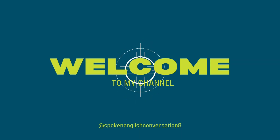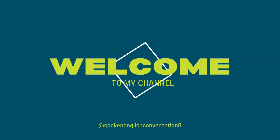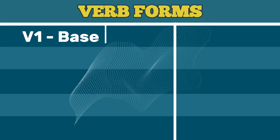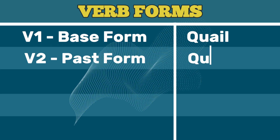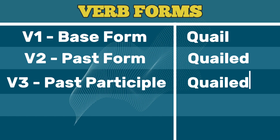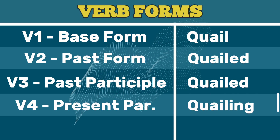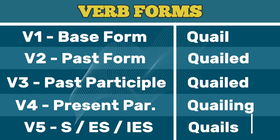Spoken English Conversations as Quail. V1 Base form: Quail. V2 Past form: Quailed. V3 Past participle: Quailed. V4 Present participle: Quailing. V5 Third person singular: Quails.